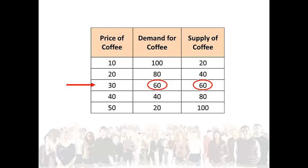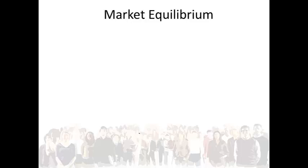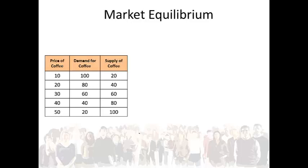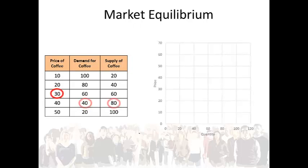Now we can illustrate this graphically. Let's use this information to draw the market demand and the market supply curves. Remember to label the axes. On the vertical axis we write price. On the horizontal axis we write quantity.